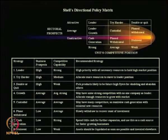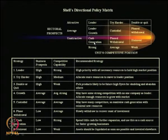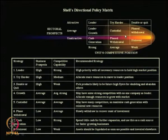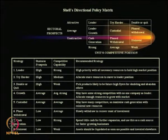If the unit's competitive position is strong but sectoral prospects are average, the recommended strategy is growth. There may be strong competition with no single company as leader; allocate enough resources to grow with the market. By allocating more resources, you may become the leader in that marketplace even though sectoral prospects are only average.